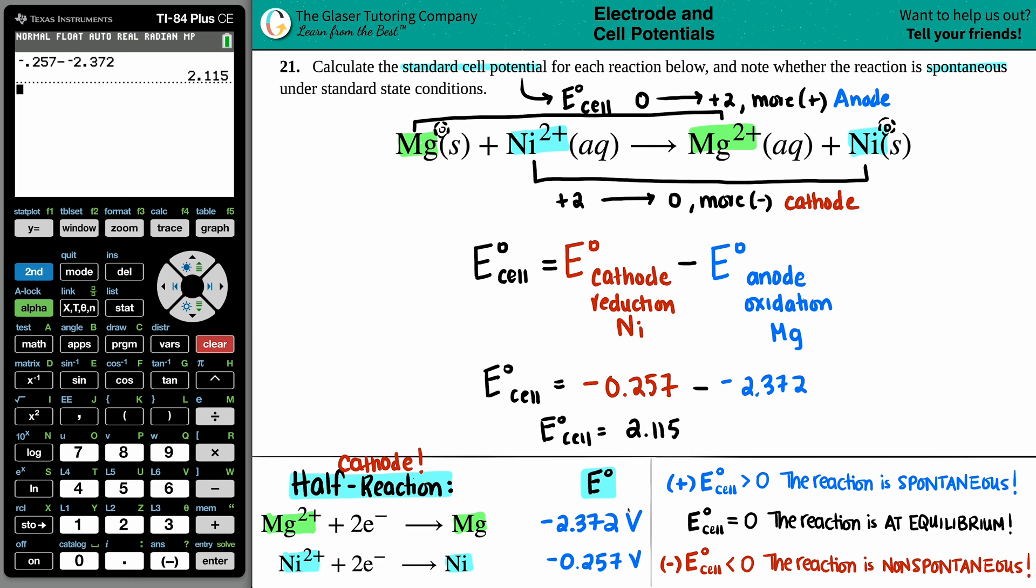And the units here are the same units for your half cells, it's volts. So that's the standard potential. Now from there, we should be able to determine whether it's going to be spontaneous or not. And that comes from the sign. If you have a positive E cell or an E cell that's greater than zero, the reaction is spontaneous.